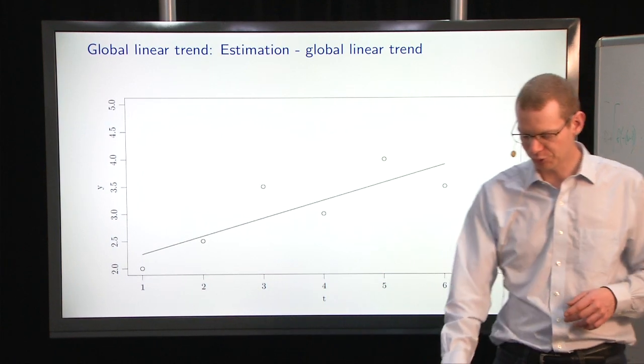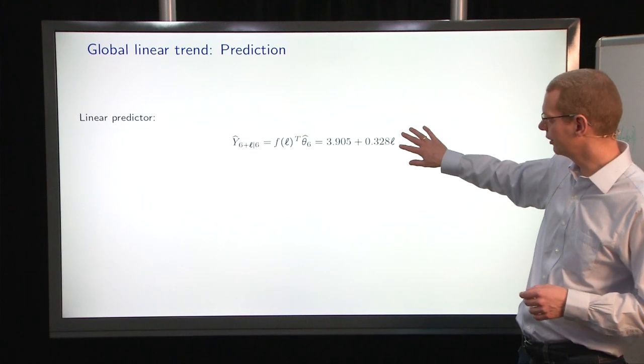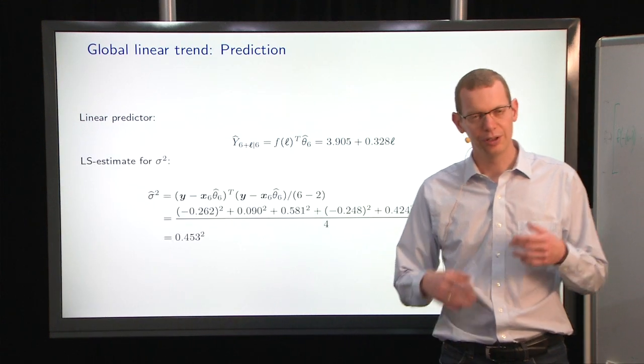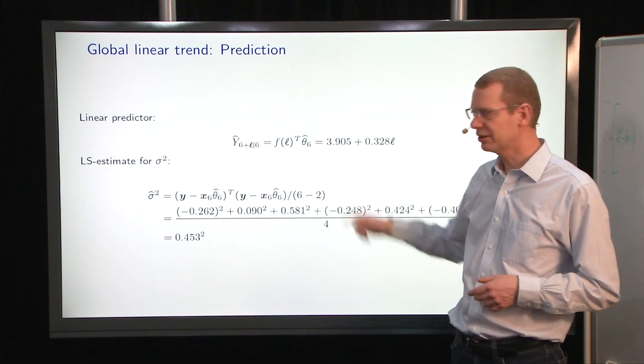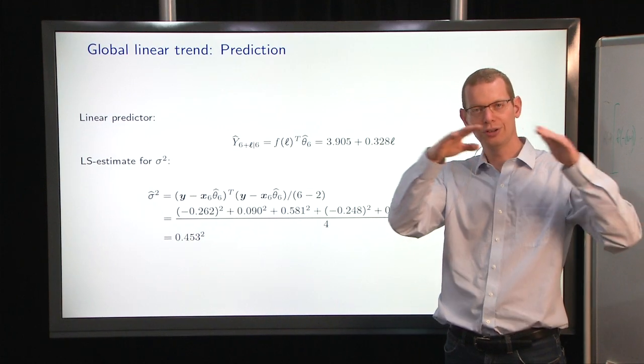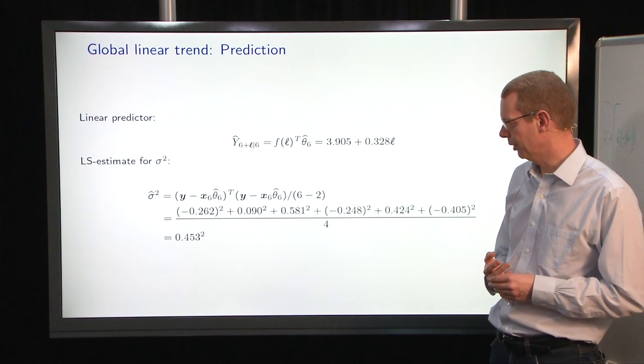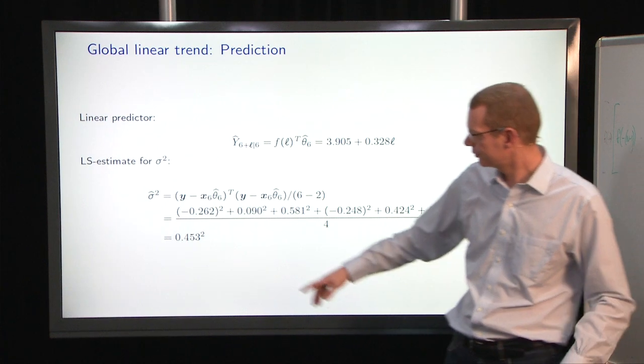And of course, what we want to do is to make a prediction. So we have the linear predictor based on the estimates here. We can write it up nicely. Now, the likelihood of observing exactly that value that we predict is 0, because it's a continuous distribution. So we need to look at a measure of uncertainty as well. First, an estimator of sigma square.